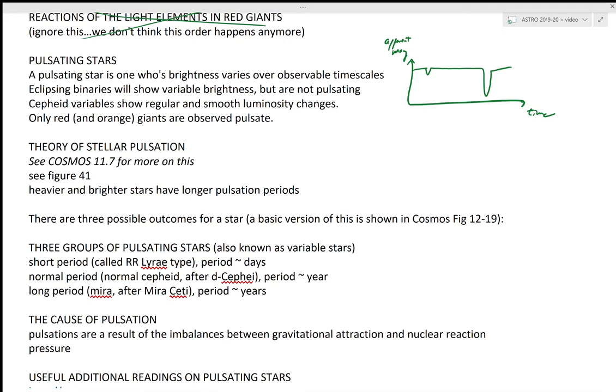But for pulsating stars, the brightness of the star varies. Again, I'll write apparent magnitude and time. In this way, a big spike and increase, then a dip, then a spike and increase, then a dip - this pattern repeats regularly as the star is literally changing size. And it's interesting that only red and orange giants are observed to pulsate. This tells us something about the types of stars or something about the reactions going on inside the stars and what's causing the pulsation.